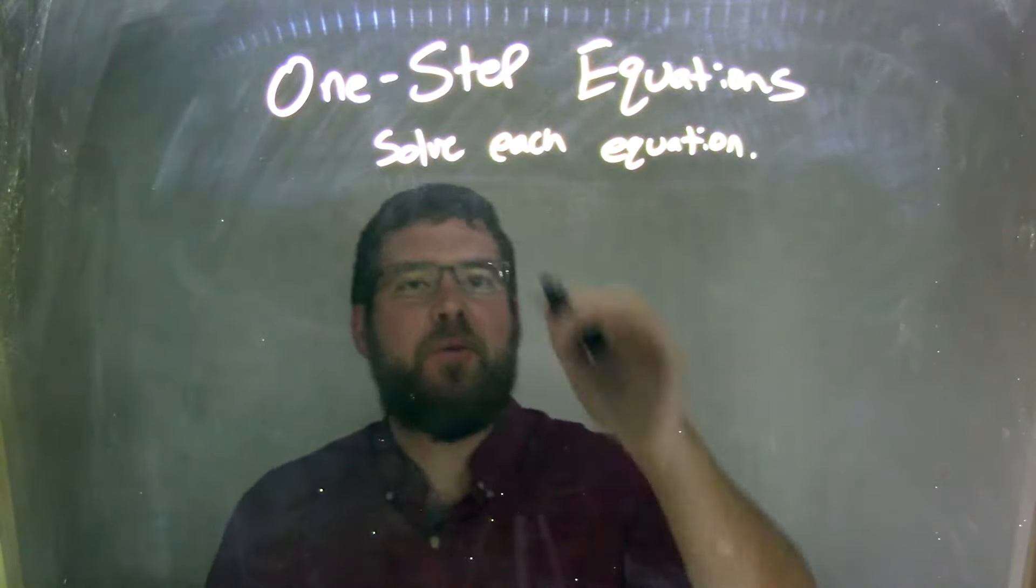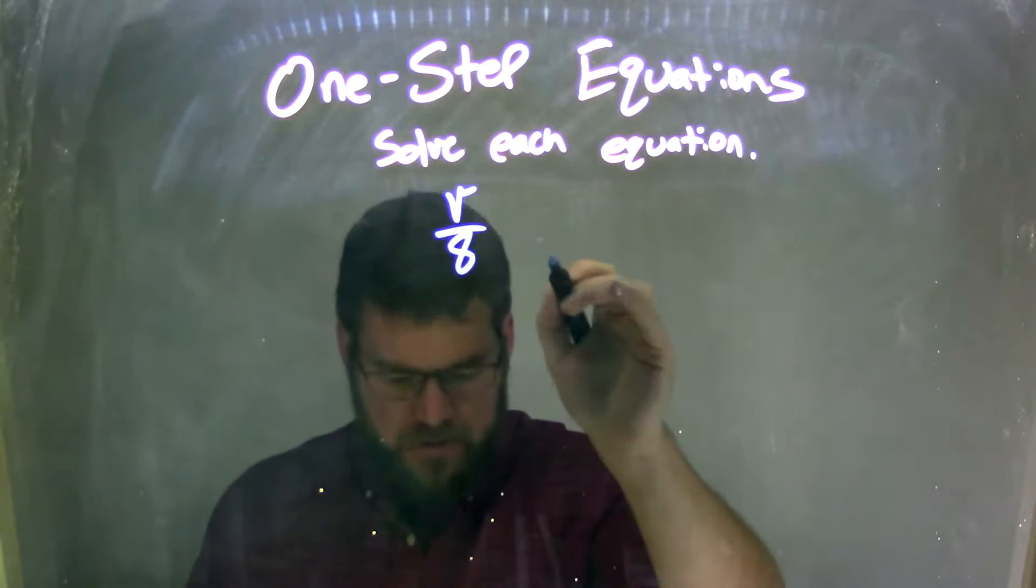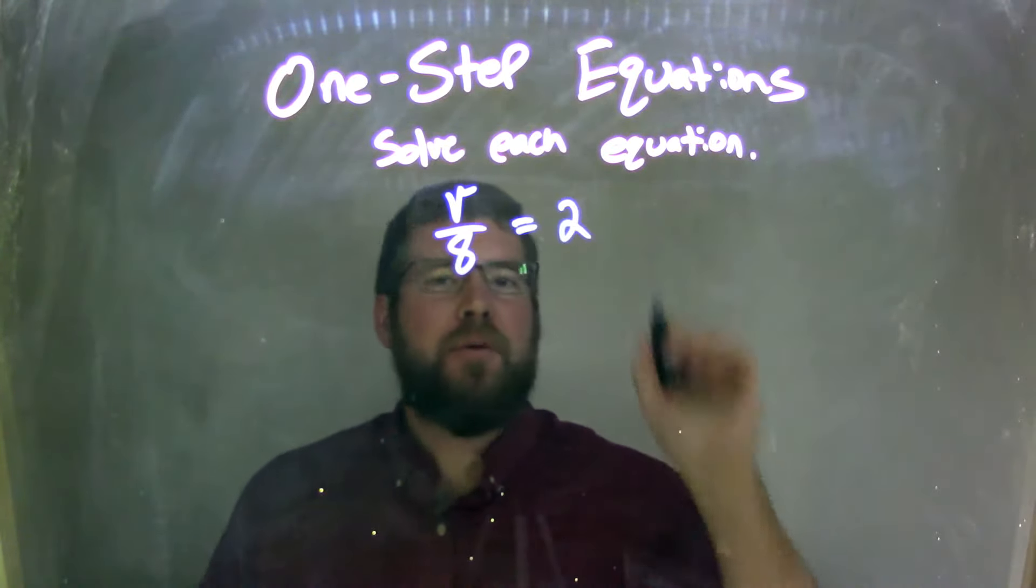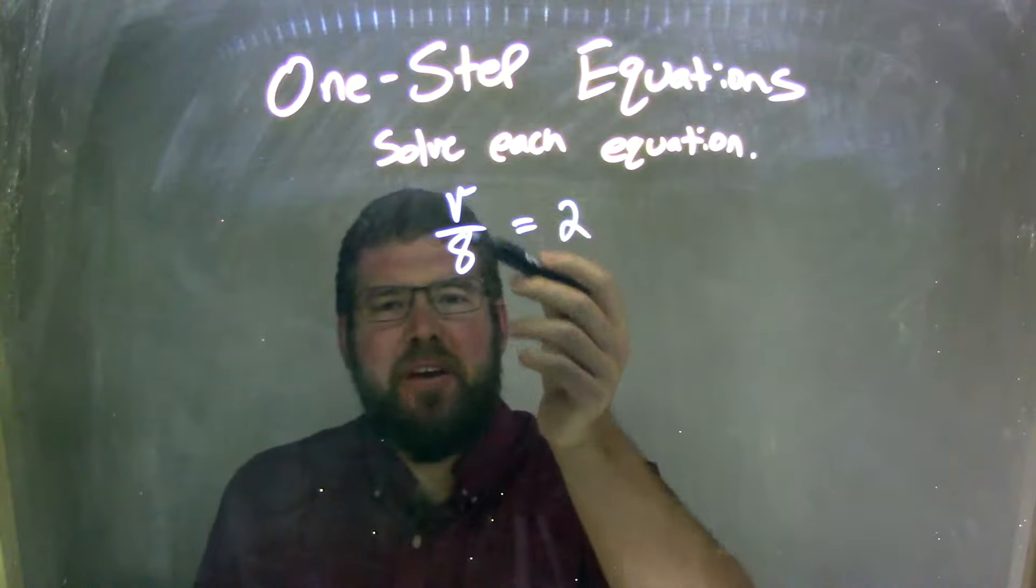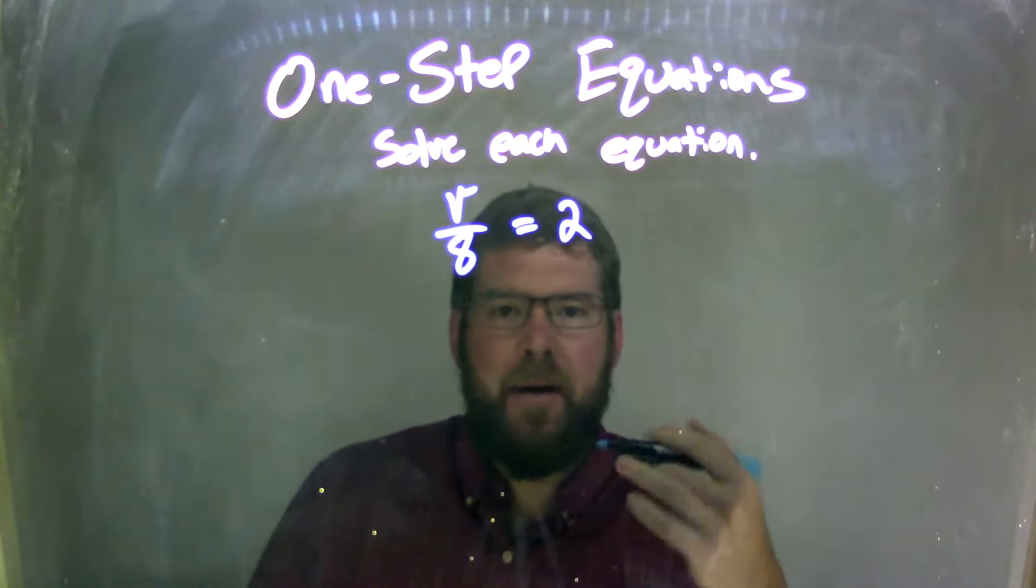So if I was given this equation, v over 8 equals 2. Well, when I see v over 8, that fraction, really it's division, v divided by 8.